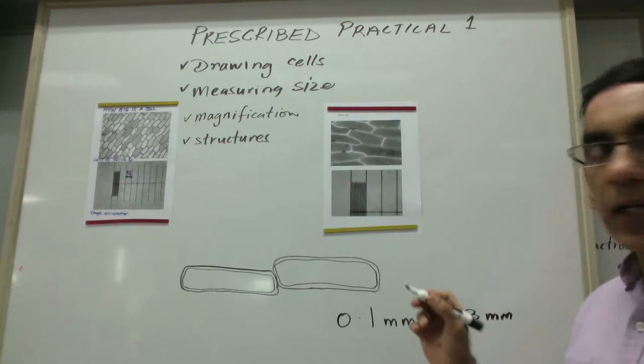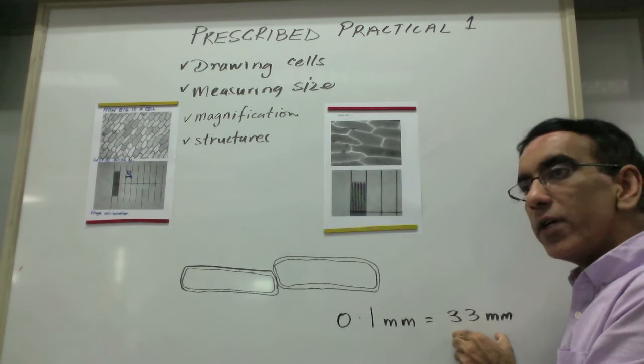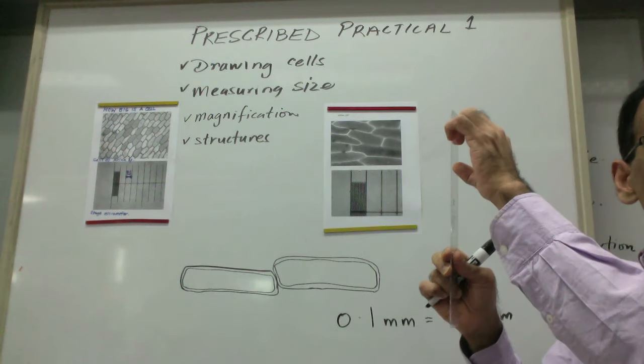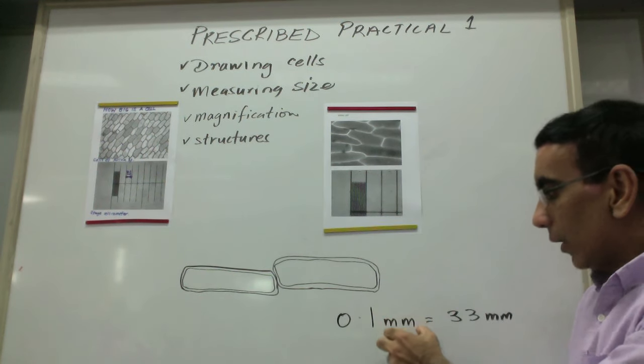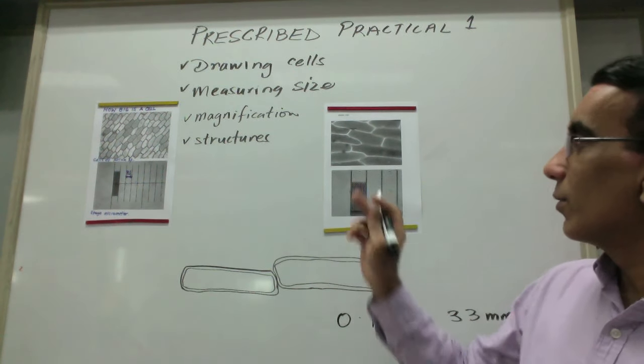So it becomes very much like a scale on a map. And every time you measure 33 millimeters with an actual ruler on this picture, it only represents 0.1 of a millimeter in the actual specimen.